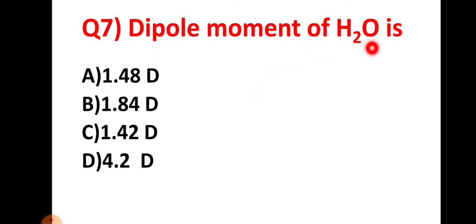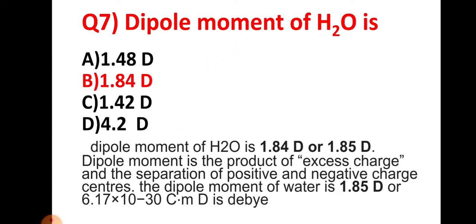Question number seven: the dipole moment of H2O is — this is a very important question. Option B is the right answer because the dipole moment of H2O is 1.84 D (where D means debye). Sometimes you see 1.85 D — both are considered correct answers.